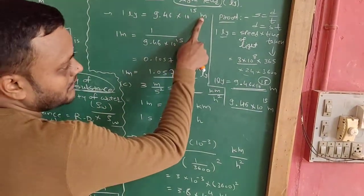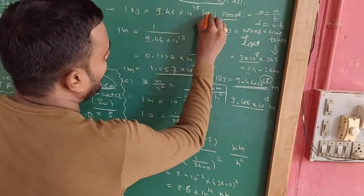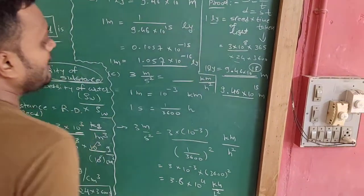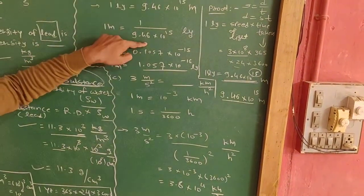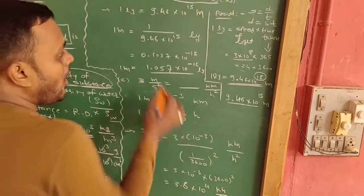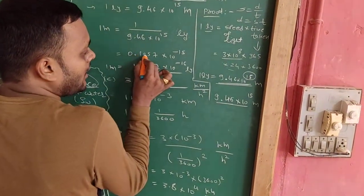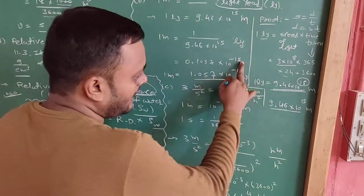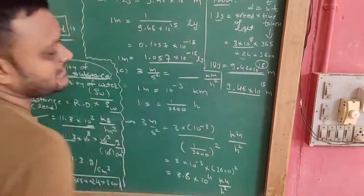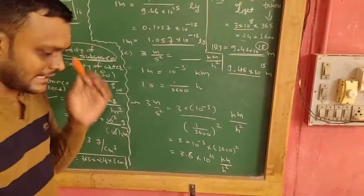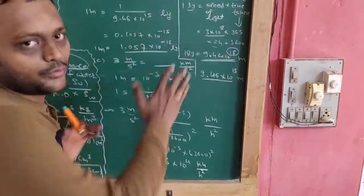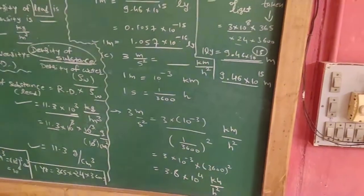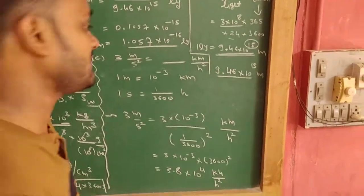Now the reverse: one meter equals blank light year. Since one ly = 9.46 into 10 raise to 15 meter, we make one meter the subject: one meter = 1 upon (9.46 into 10 raise to 15) light year. Dividing 1 by 9.46 on a calculator gives a value, and since we shift the decimal one place to the right, the power becomes negative — already minus 15, minus 1 more gives minus 16. So one meter = 1.057 into 10 raise to minus 16 light year.